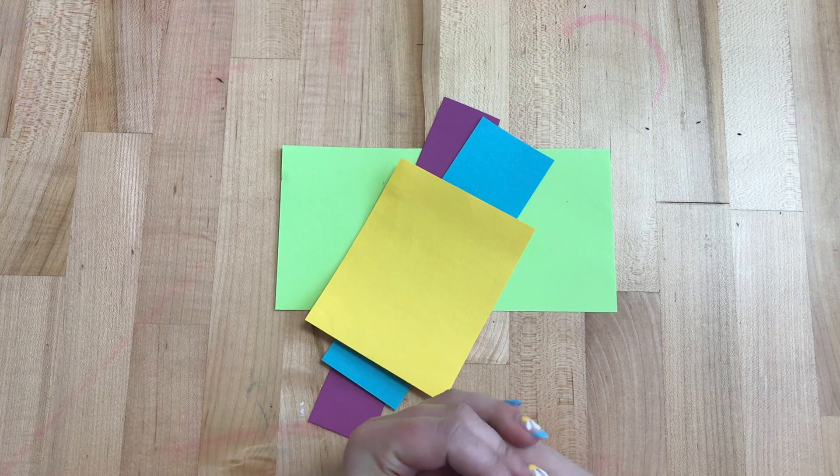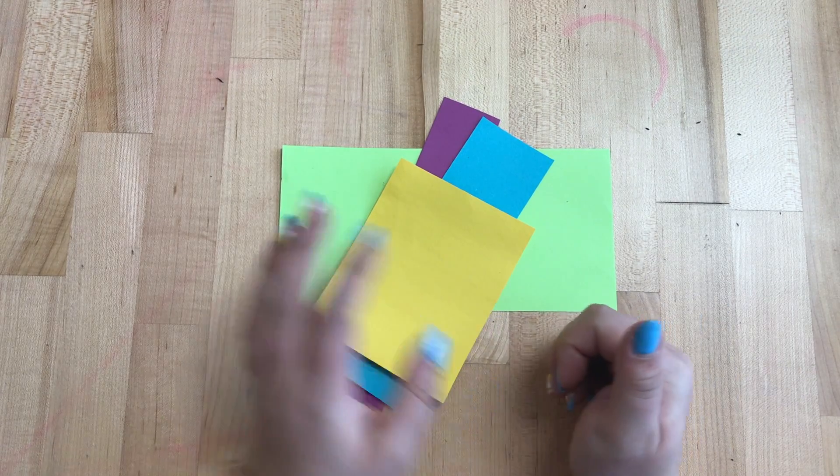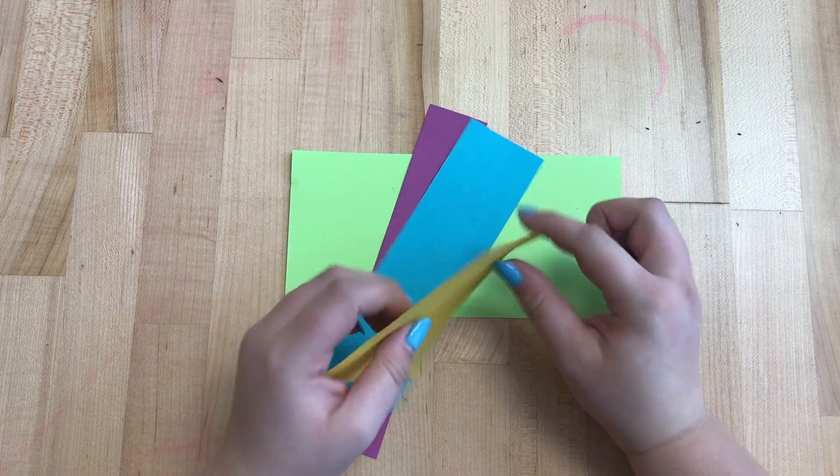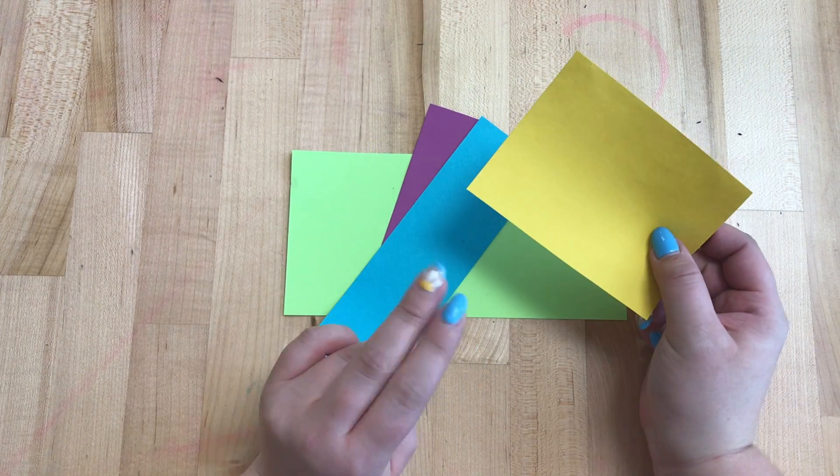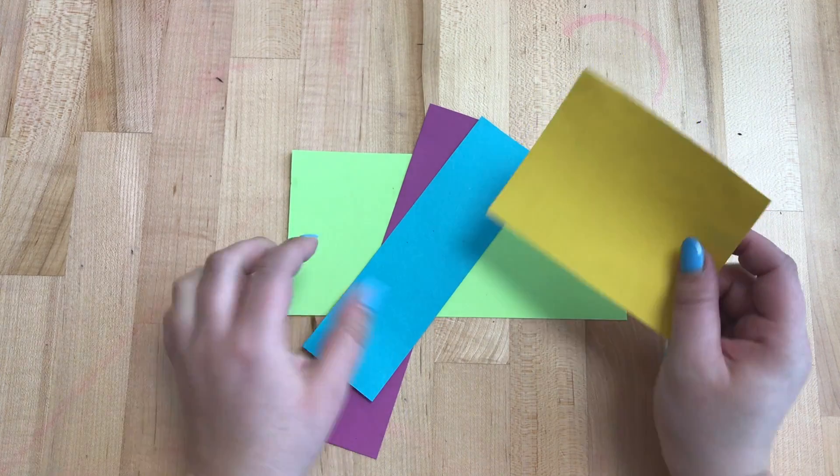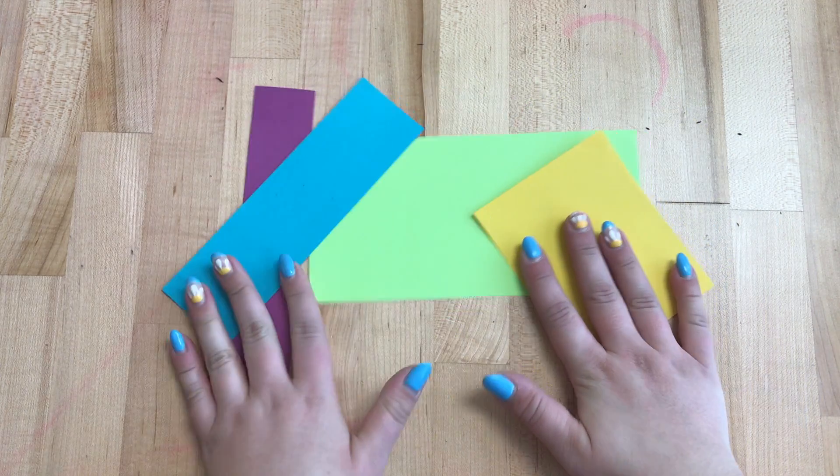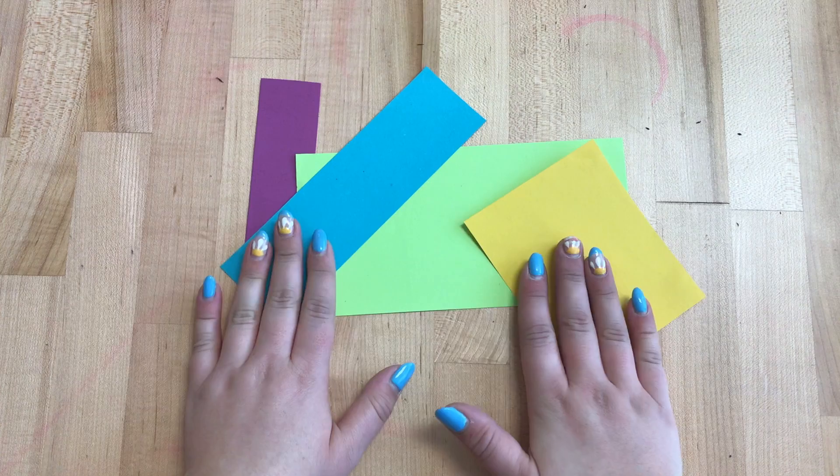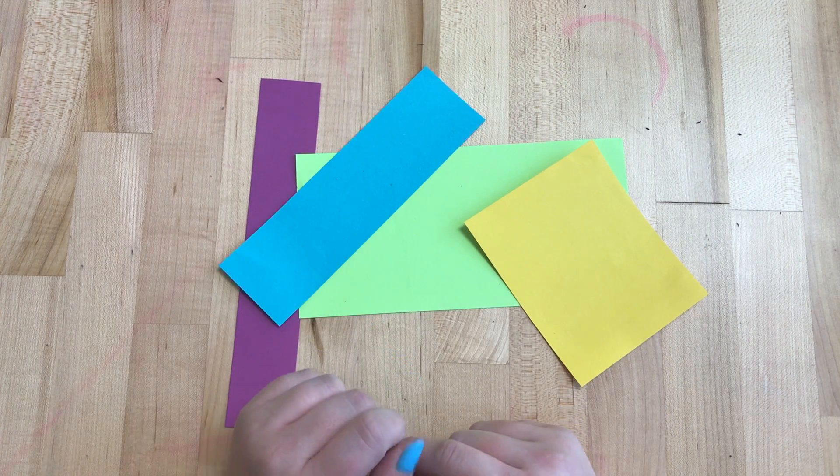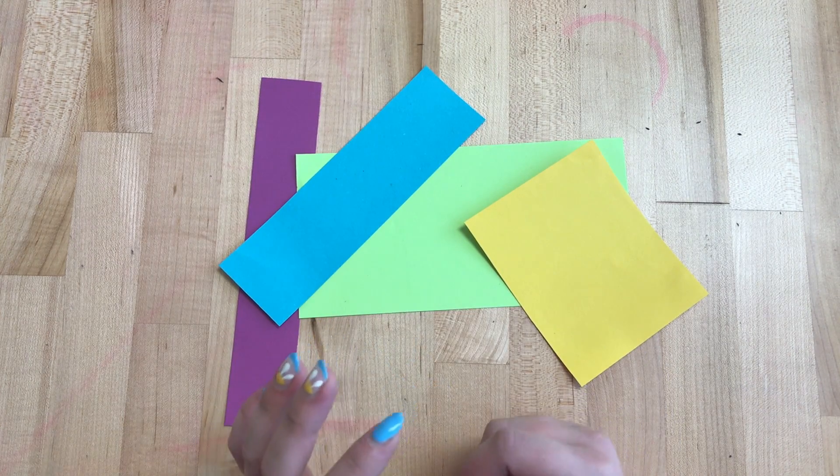We're going to be learning how to kind of make sculptural shapes out of paper. We're going to be using this for our Yayoi Kusama inspired project. So what we're going to do is learn how to create these and the next class we're going to apply these to our project.